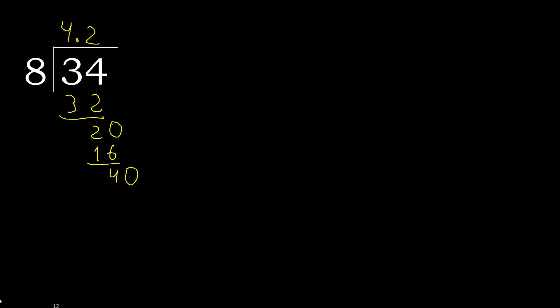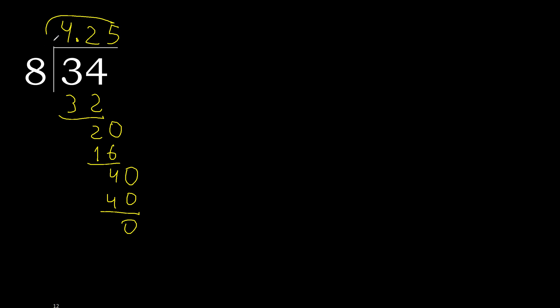Complete to 40. 8 multiplied by 5 is 40, which is not greater. Subtract: 40 minus 40 equals 0. Therefore finished. 34 divided by 8 equals 4.25.